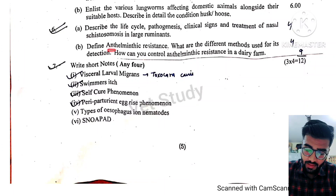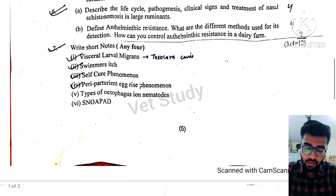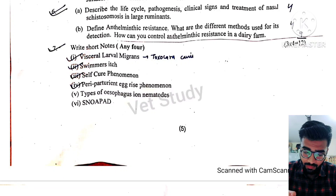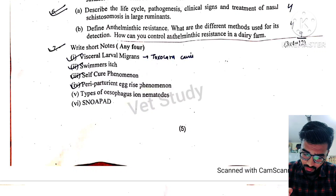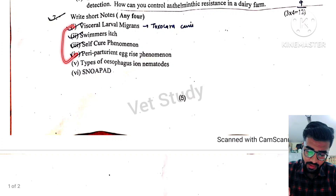Then, define anthelmintic resistance and different methods used for its detection, and how to control anthelmintic resistance in the dairy farm. Next, we have short notes: VLM, swimmers itch, self-cure phenomenon, periparturient egg rise phenomenon, type of esophagus in nematodes, and a short note. I have covered the first four papers.